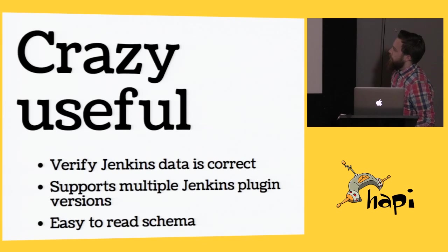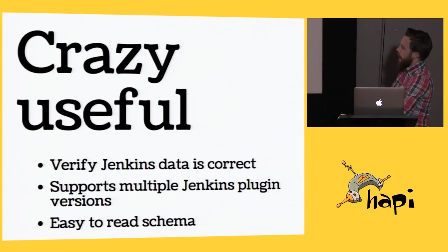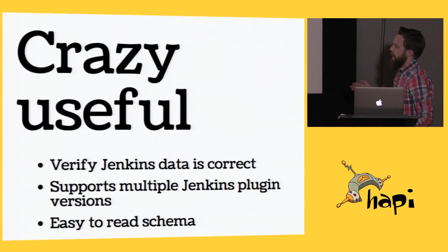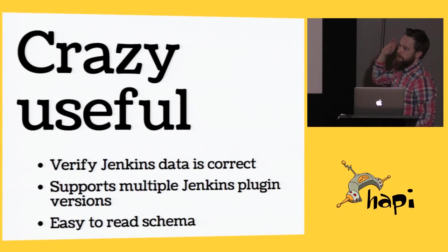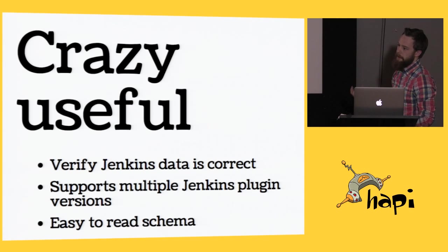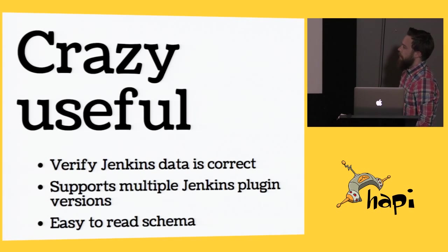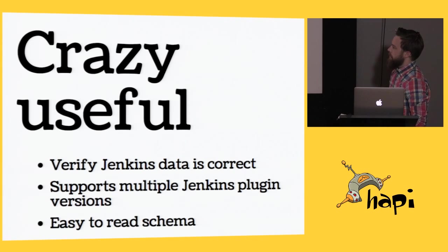We use this everywhere — not just in our Happy application, but also in other things that are handling data from Jenkins. It's able to verify that we have many instances of Jenkins that all run different plugin versions that pass different data to Redis, and so this verifies the data is correct in the format that we expect. We found tons of issues in various parts of our systems by using Joy, and it's amazing.